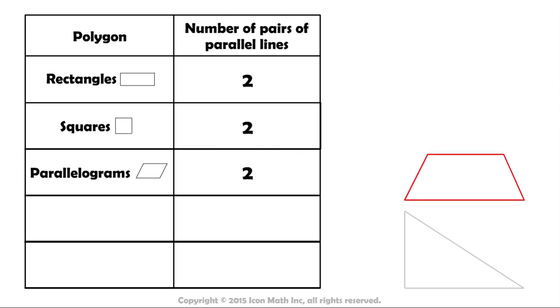In this shape, you can notice that the distance between these two lines stays the same, so they are parallel. We call this shape a trapezoid. Trapezoids are quadrilaterals with at least one pair of parallel lines.